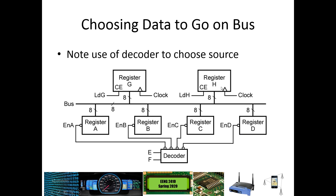If you want to transfer to register G or register H, once the register you want is out onto the bus, you can choose to load G or load H — or copy into both. For example, to transfer the contents of register B into register H: B is the source, so put 01 into E and F, which enables register B and puts its contents onto the bus. Then activate the load on register H, and on the next clock event, register H holds the contents that were previously in register B.